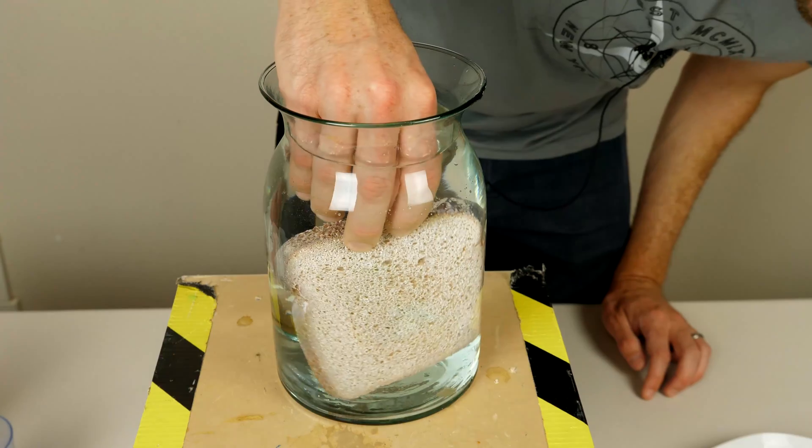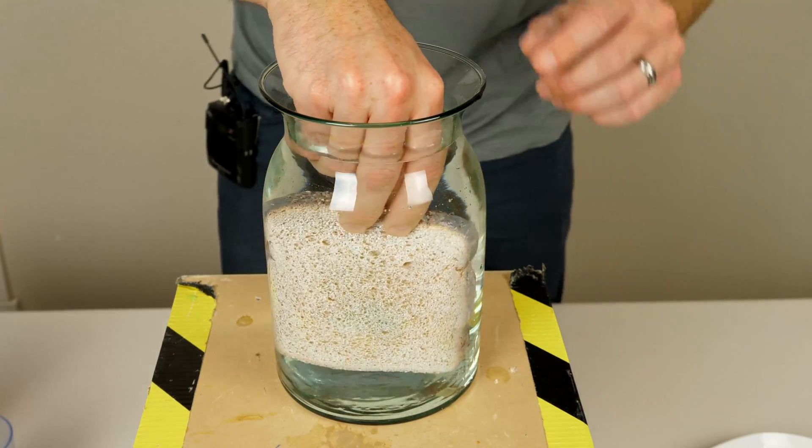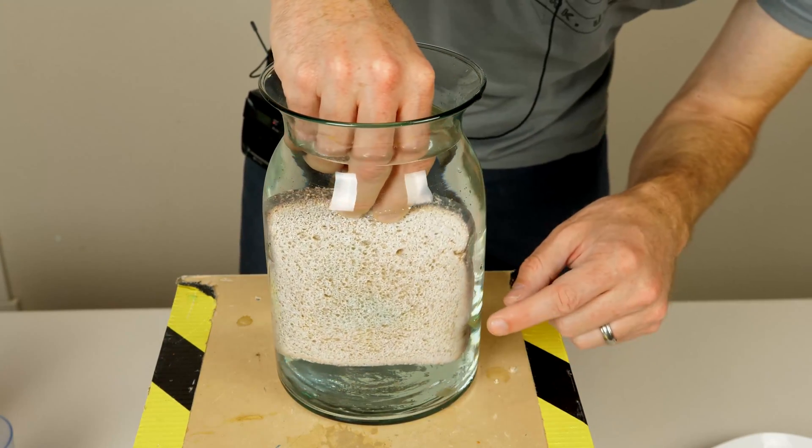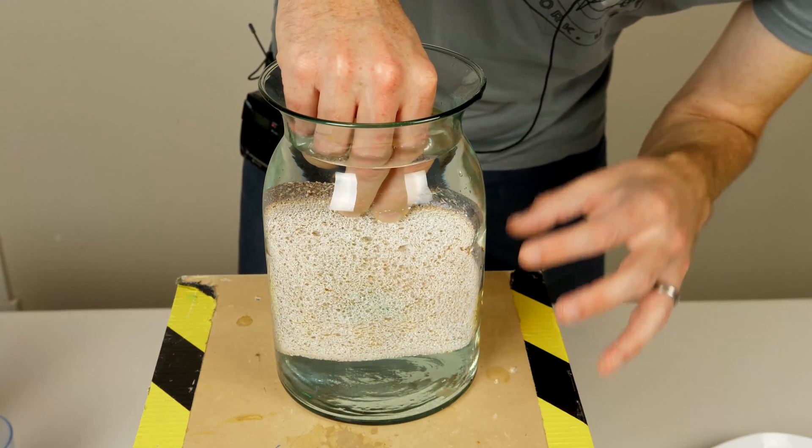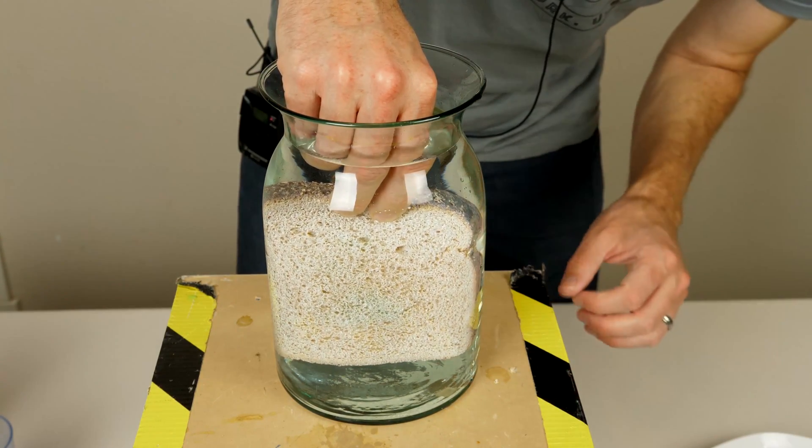You can see it shimmers like that because of the air bubbles trapped in between. So what the hydrophobic surface does is it traps air in between the water and the bread.